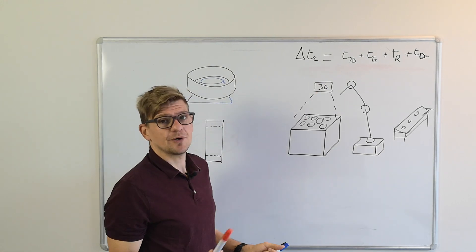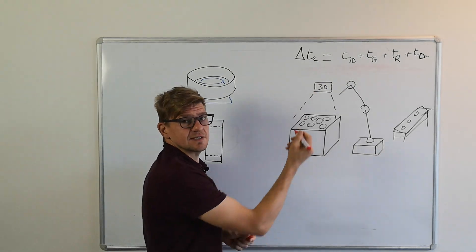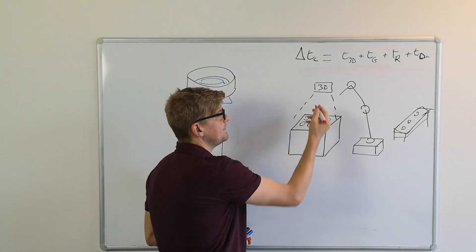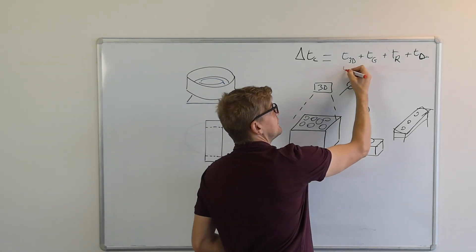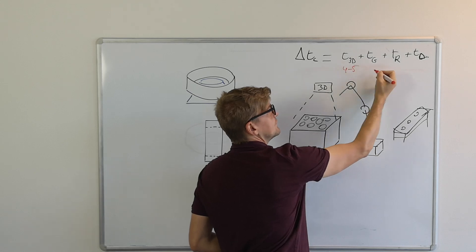So if we split up the cycle time, what do we have? Let's say the vision system takes some time, the robot grasping. Alright, let's start counting. So we need four, five seconds for the vision system.